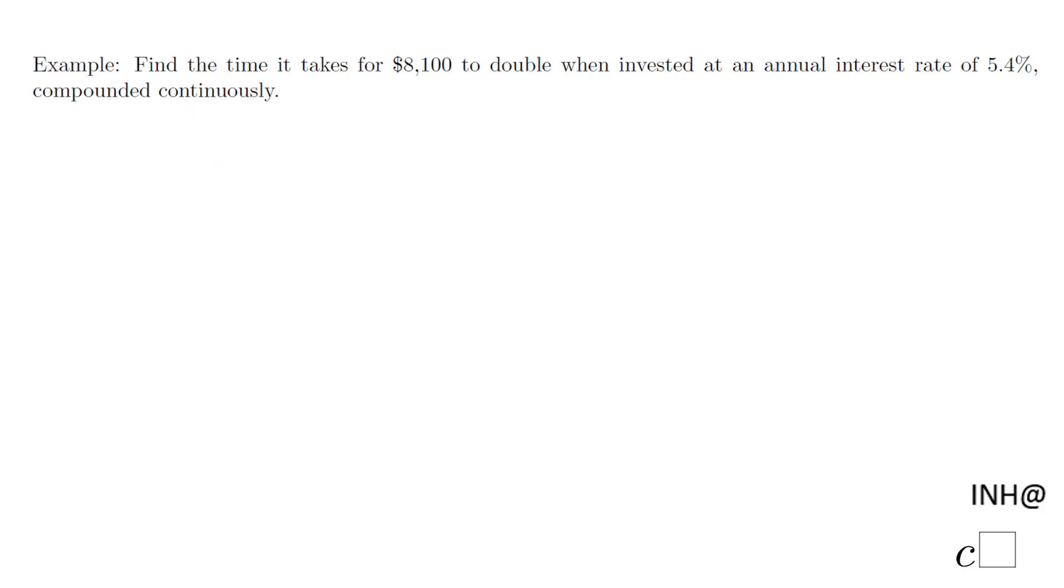Welcome or welcome back at I Need Help at C Square. In this example, we need to find the time it takes for $8,100 to double when invested at an annual interest rate of 5.4% compounded continuously.